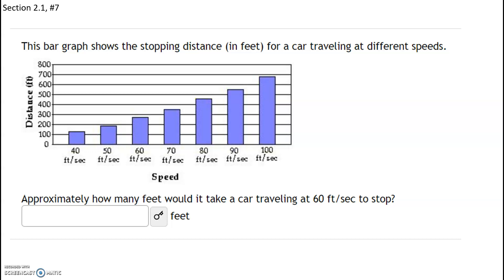The bar graph shows the stopping distance in feet of a car traveling at different speeds. Approximately how many feet would it take for a car traveling at 60 feet per second to stop? Notice that the x-axis represents the speed, and the y-axis represents the distance it takes to stop.